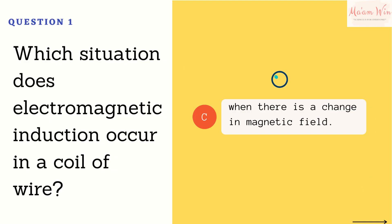Let's check your answer. The right answer is letter C. Electromagnetic induction is the process by which a changing magnetic field produces an electric current. Changing the magnetic field can be done by moving a magnet into a coil of wire or moving the coil of wire near a magnet.